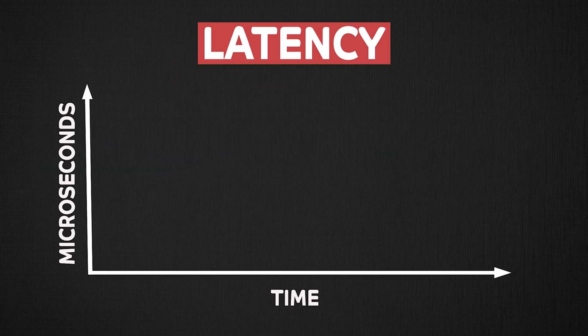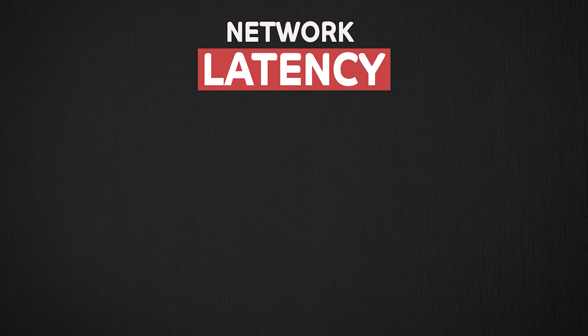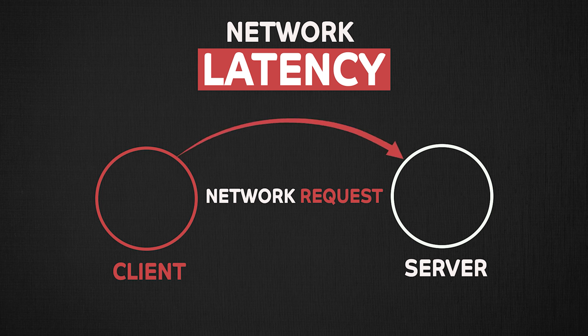Latency is basically how long does it take for data to go from one point of a system to another point. It could be different things. For example, network latency means how long does it take for your network request to go from the client — let's say you — to the server, say Google's server, and back to the client.